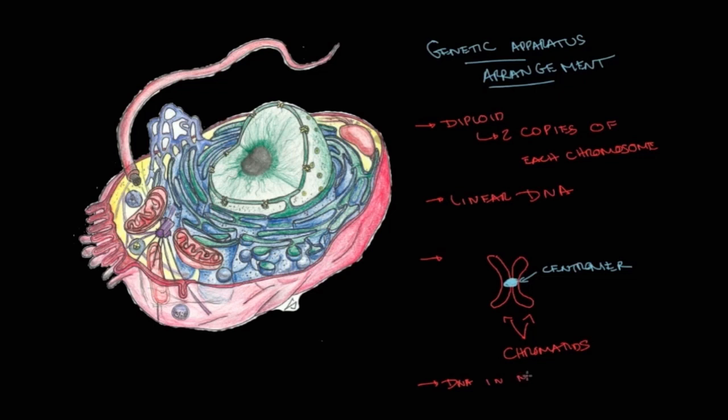And also it is important to mention that DNA mitochondria is circular. Which gives you a hint of how cells or eukaryotic cells were originated. We're going to talk about that in endosymbiosis.